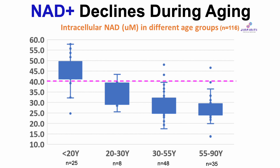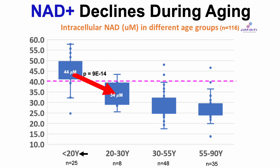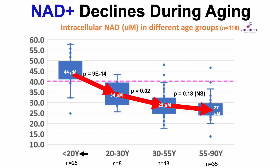In GINFINITY's data for 116 subjects: people younger than 20 years old had an average intracellular NAD of 44 micromolar, significantly higher than 20-to-30-year-olds at 34 micromolar. 20-to-30-year-olds also had significantly higher NAD than 30-to-55-year-olds at 29 micromolar. And 55-to-90-year-olds averaged 27 micromolar, not significantly different from the 30-to-55 group.